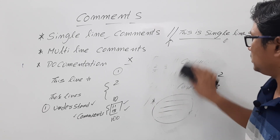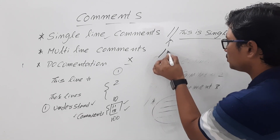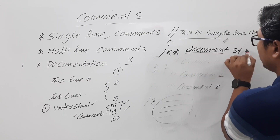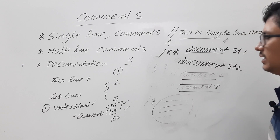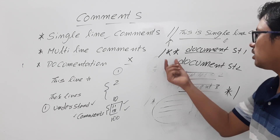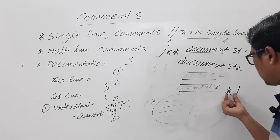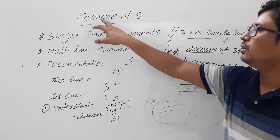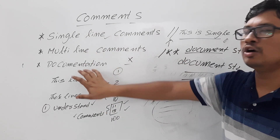Documentation can be written using slash followed by two stars. Then you write documentation statements, which can span multiple lines. It will end with star and slash. Don't confuse - it starts with slash two stars, but it ends with only one star and then slash. So this is the way you write the documentation. I hope you have understood what is a comment, what is the need for comments, and how single line comments, multi-line comments, and documentation are represented.